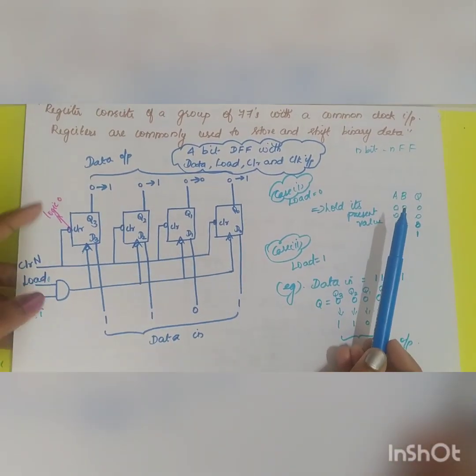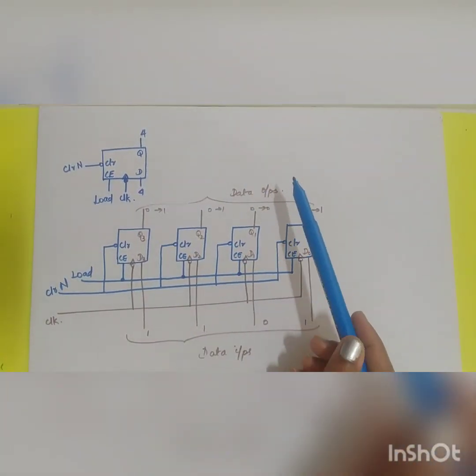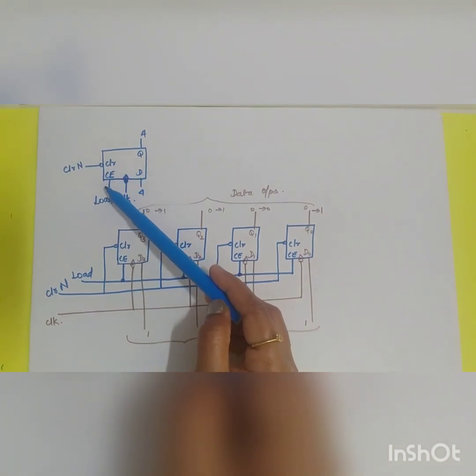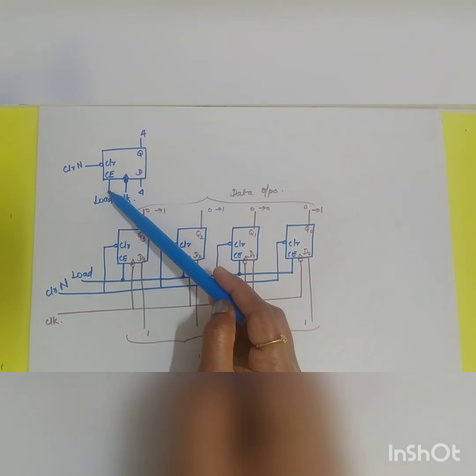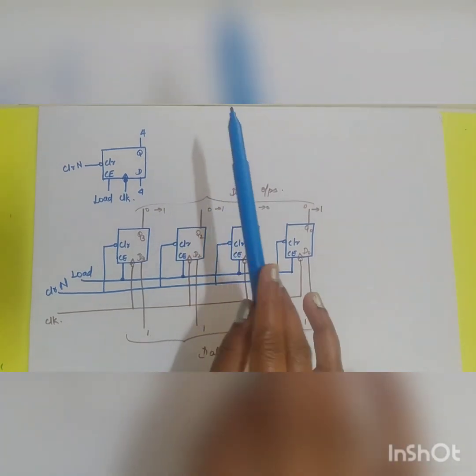In order to avoid the timing problem, if you have a clock enabled signal you can modify the circuit. Now the only modification is you are going to give the load and the clock separately. The load will be given to a clock enabled signal. CE stands for clock enabled. All the remaining things are the same.